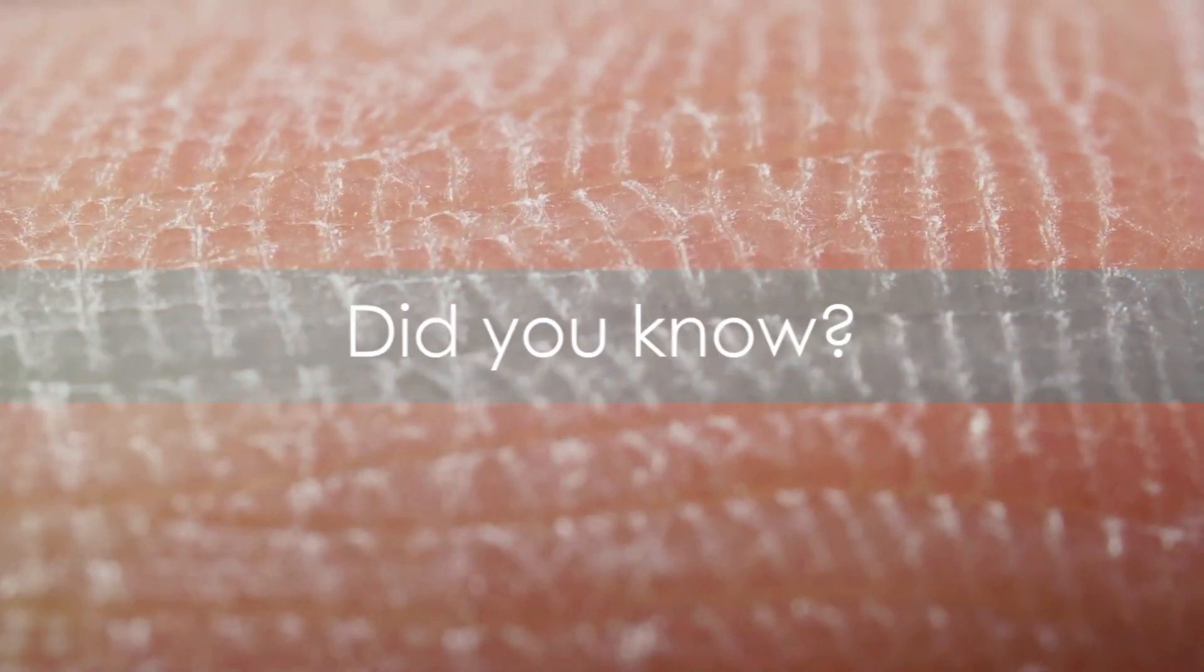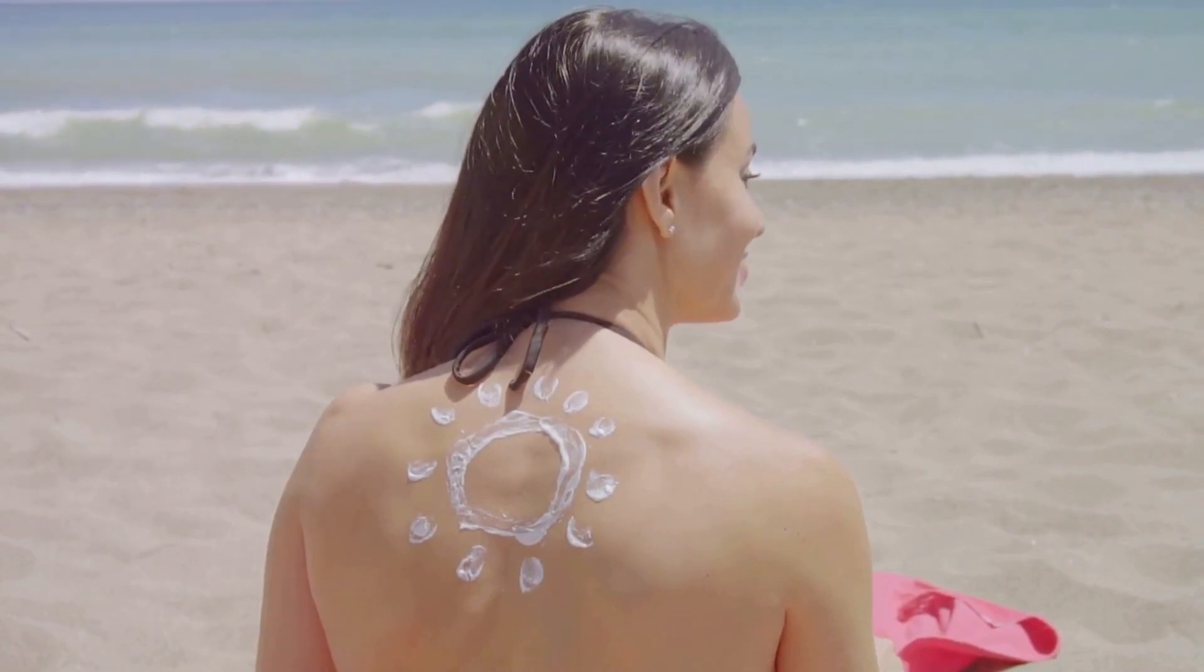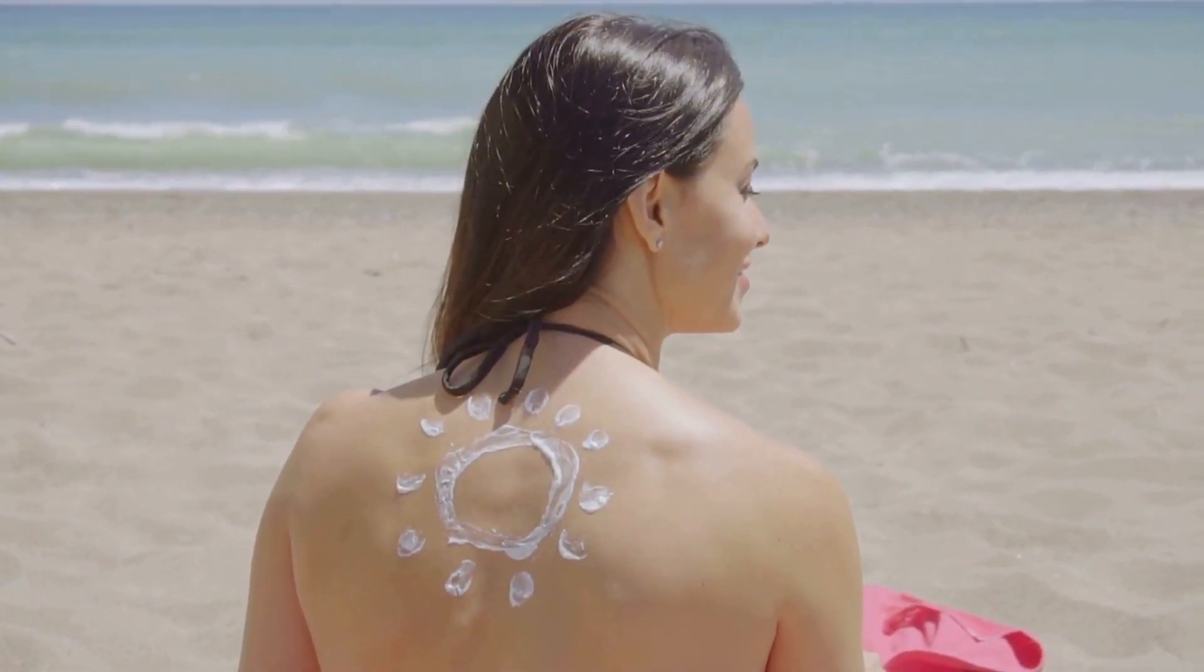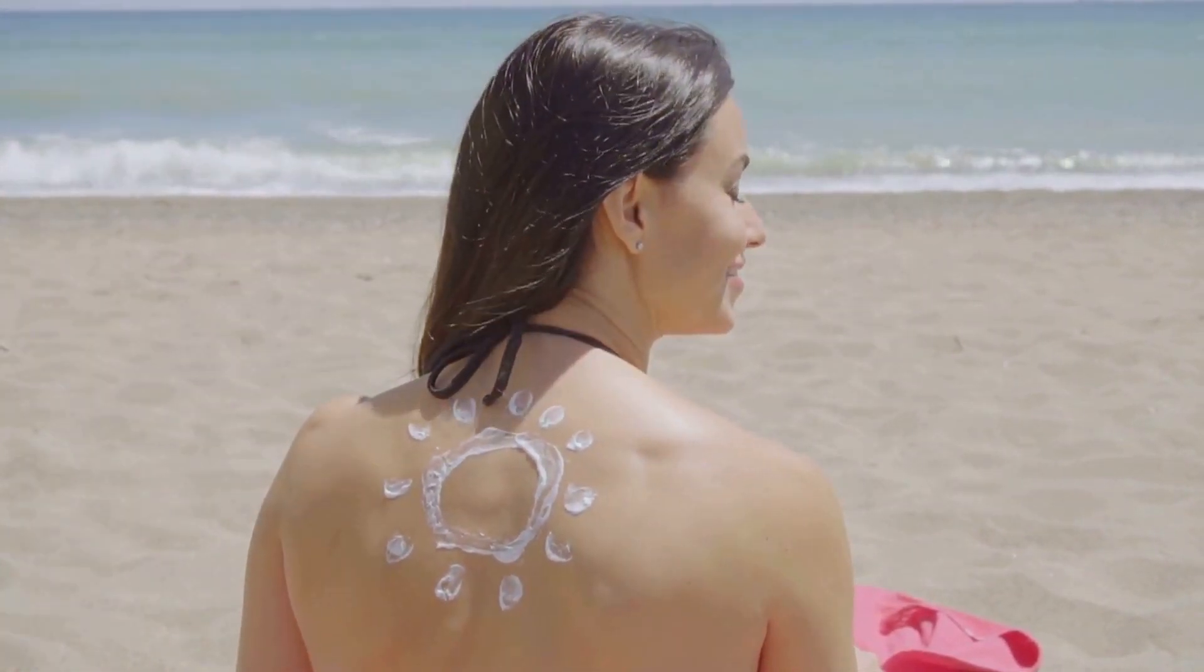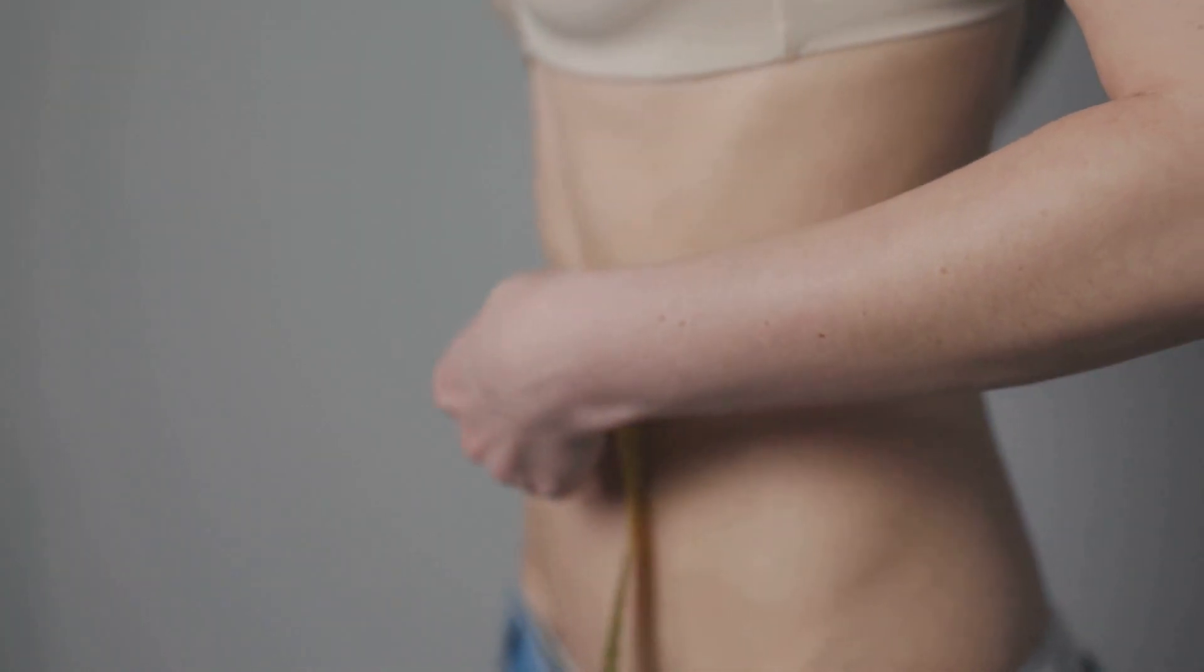Your skin is your body's largest organ and it weighs twice as much as your brain. It's an astounding fact, isn't it? This extraordinary organ that wraps us up not only shields our inner systems but also serves as our primary interface with the world. It regulates body temperature, sends sensory information to the brain, and even aids in vitamin production. So the next time you consider losing weight, remember your skin holds a significant portion.